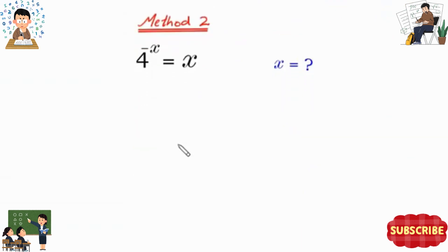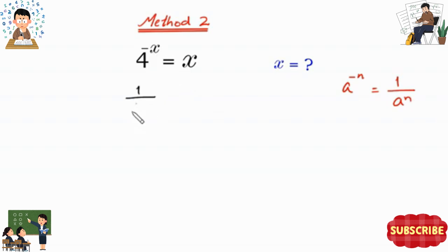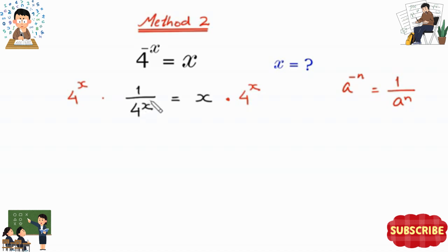In Method 2, we use the exponent property a to the power negative n equals 1 over a to the power n to rewrite 4 to the power negative x as 1 over 4 to the power x, so 1 over 4 to the power x equals x. Multiplying both sides by 4 to the power x gives 1 equals x times 4 to the power x.